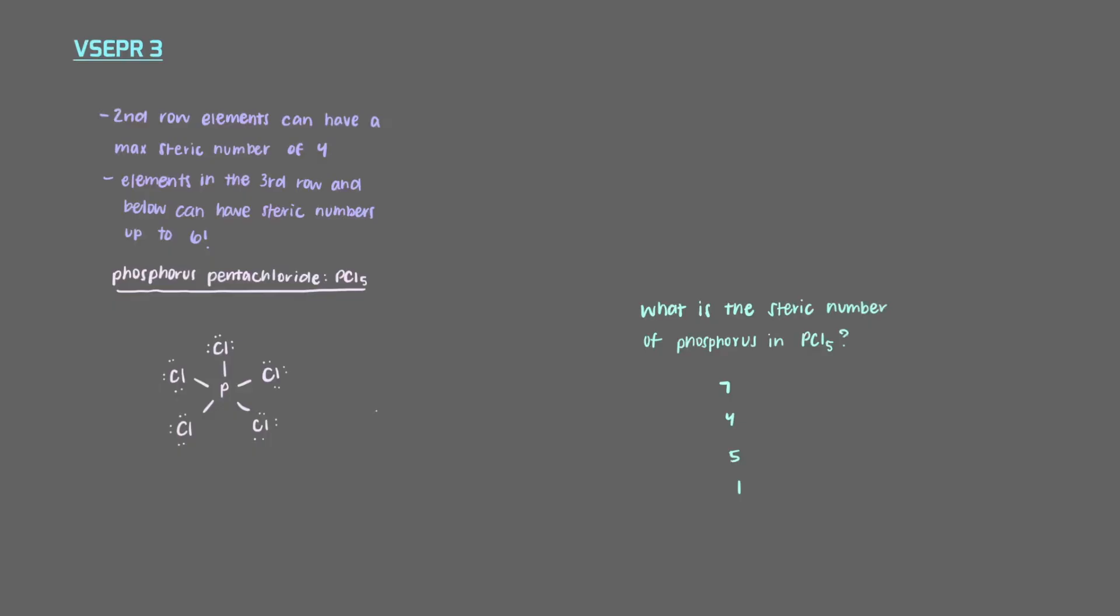If we look at the Lewis structure we drew, we see that the phosphorus atom has five things attached to it. In this case, there are five atoms and no electron pairs. So in AXE notation, we would just write this as AX5.